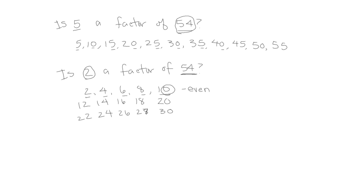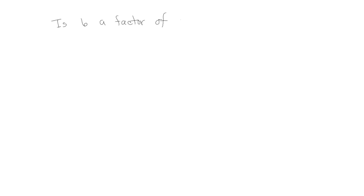Now we're going to ask: is 6 a factor of 54? We first look to see whether or not 6 times something is something we know from our math facts. And in fact, 6 times 9 is 54. Therefore, both 6 and 9 are factors of 54.